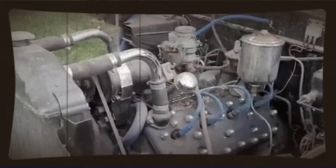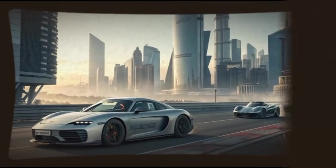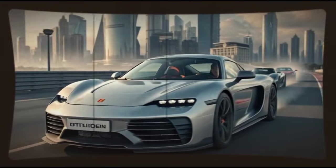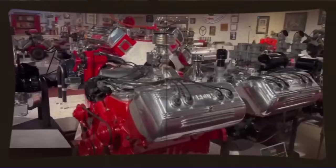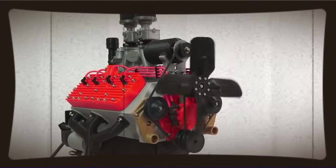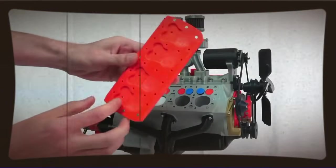Ranto's two-stroke V8 fell victim to these same forces. It was an elegant solution to the problem of making more power from a smaller, lighter engine. But it arrived at a moment when the world wasn't ready for it, when the economic conditions didn't support the risk of adopting new technology, when the manufacturing capabilities needed to produce it at scale didn't exist or weren't accessible to its inventor. It's a reminder that innovation isn't just about having a brilliant idea, it's about having that idea at the right time in the right place with the right resources to bring it to fruition.